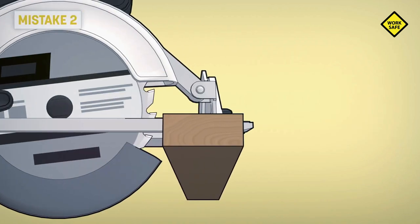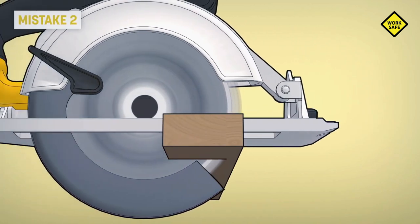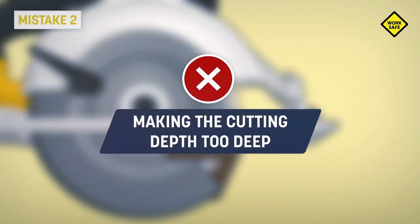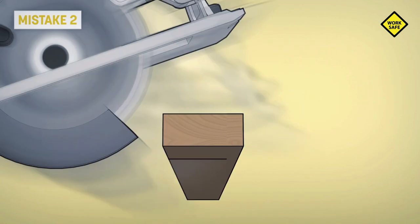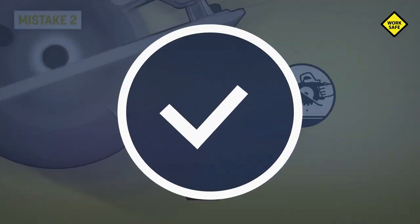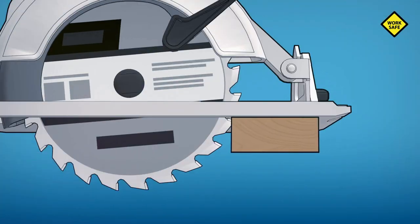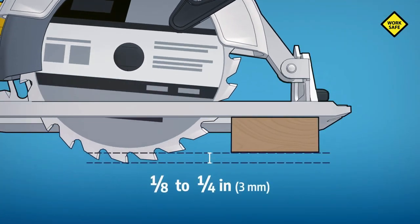Mistake 2: Making the cutting depth too deep. The larger the contact area with the blade, the higher the risk of kickback. Adjust the blade so that it extends about 1/8 of an inch below the material. That's less than a full tooth.